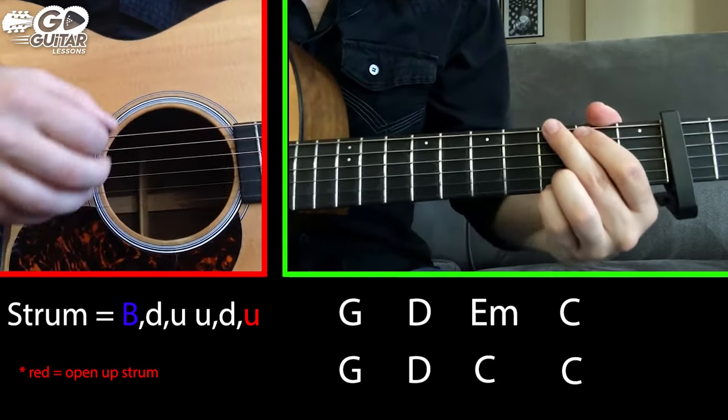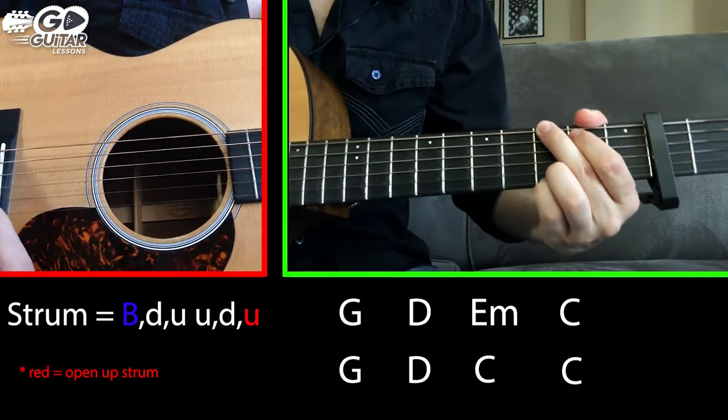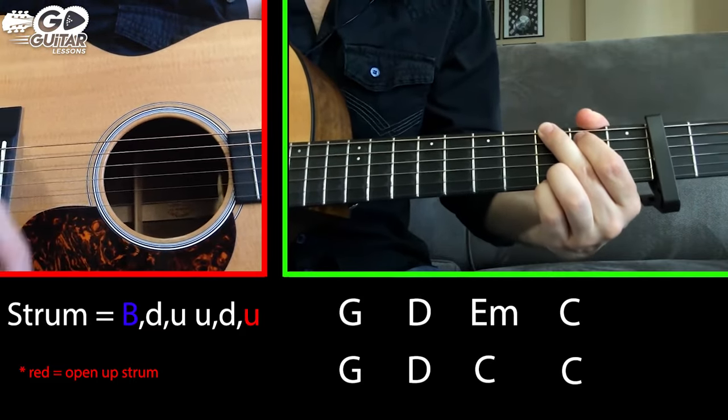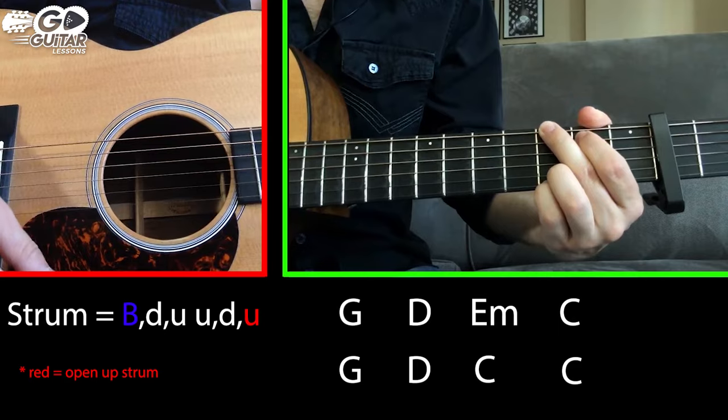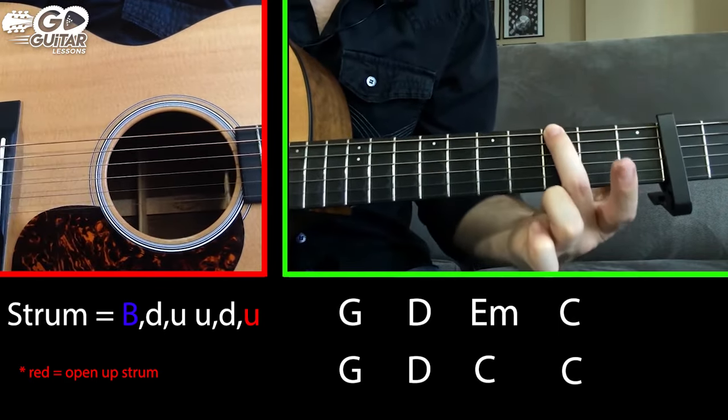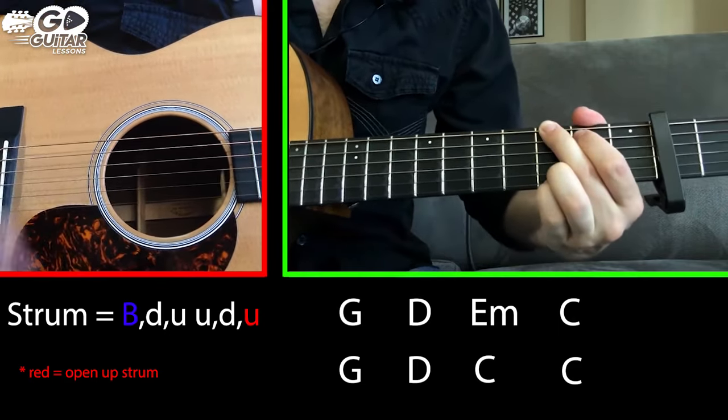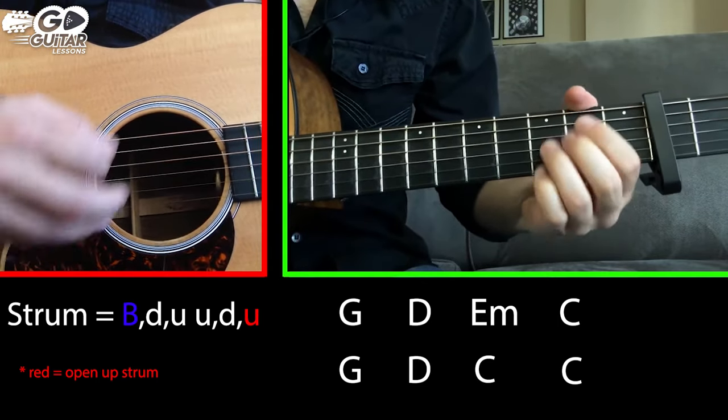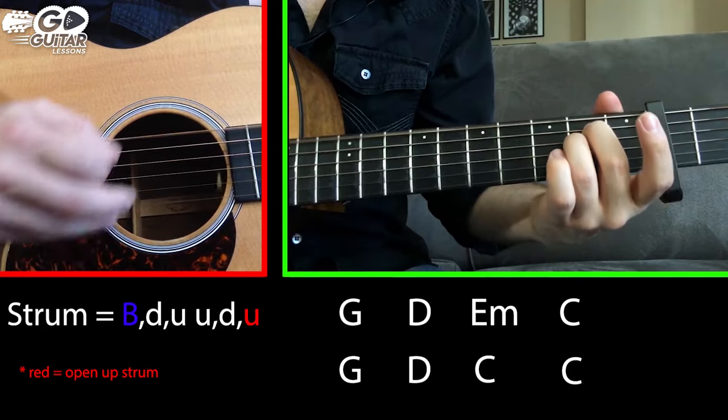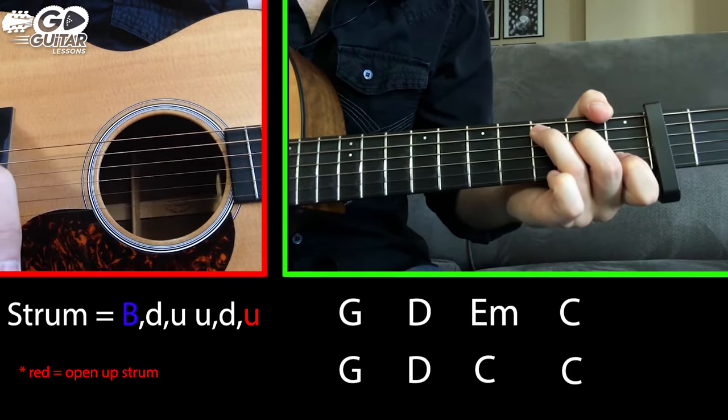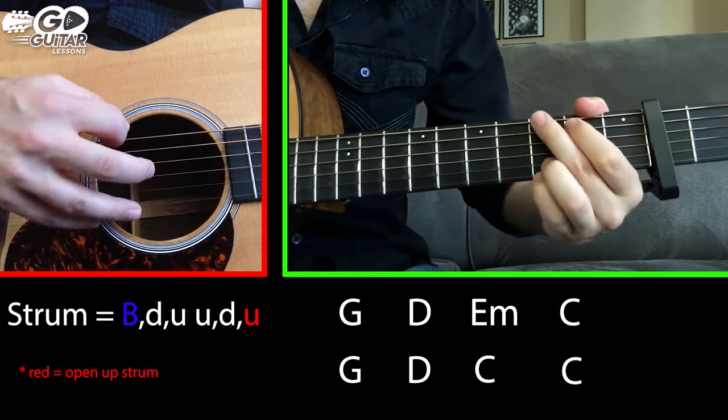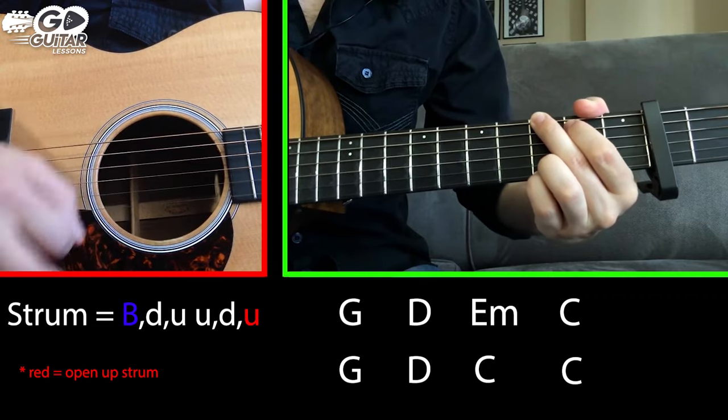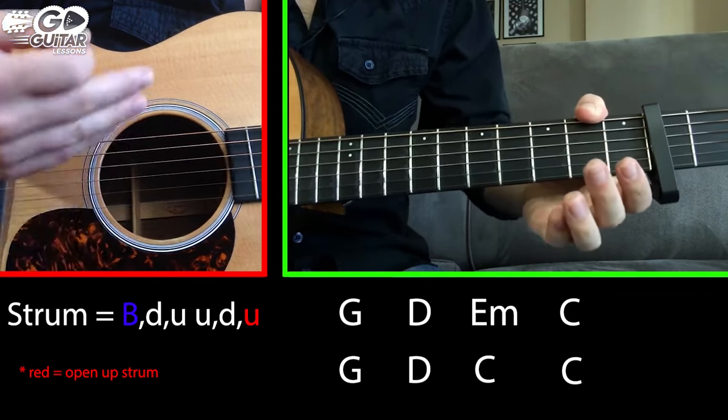The bass note that we're hitting is whatever the bass note is for that chord. So for example, on a G chord, the bass note is here on the low E string. On a D chord, it's the D string. On an E minor chord, it's the low E string. And on a C chord, it's the A string. So we would do it like this. Bass down, up, up, down, up. We still use the open up stroke.